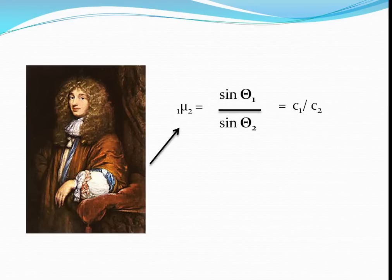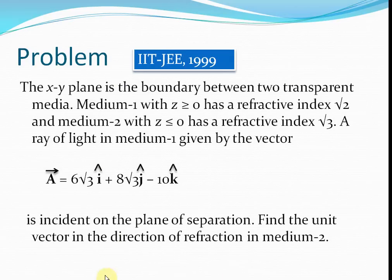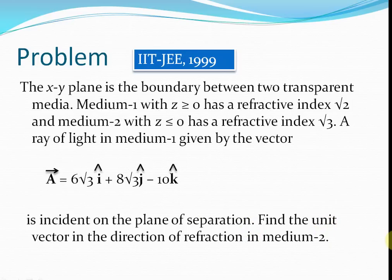We've just started this chapter, but we are already ready to solve an IIT JEE problem. This question was asked in IIT JEE 1999. It's a large question with a lot of data and details. The xy-plane is the boundary between two transparent media. Medium 1 with z ≥ 0 has a refractive index of √2, and medium 2 with z ≤ 0 has a refractive index of √3. A ray of light in medium 1 is given by a particular vector and is incident on the plane of separation. Find the unit vector in the direction of refraction in medium 2. This question has complicated such simple concepts we just learnt — the vectorial representation of the incident ray is given and we have to find the unit vector in the direction of the refracted ray.